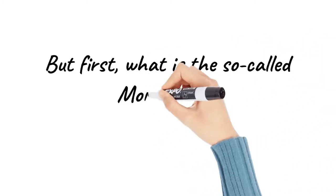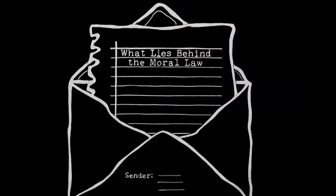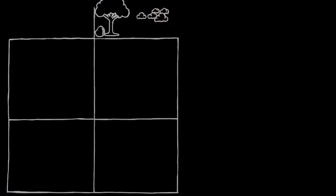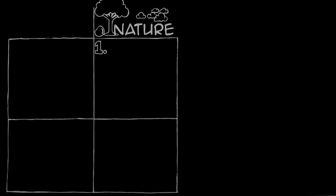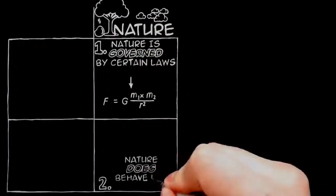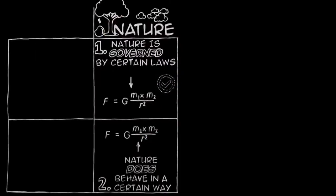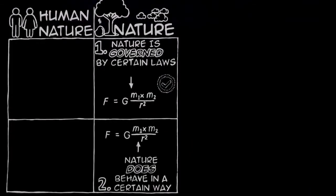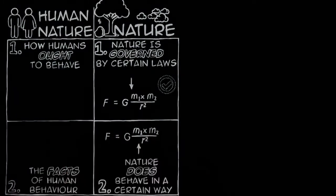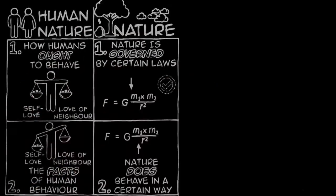Before we proceed, let's first understand what is the moral law. What lies behind the moral law? Let us sum up what we have reached so far. In the case of stones and trees and things of that sort, what we call the laws of nature may not be anything except a way of speaking. When you say that nature is governed by certain laws, this may only mean that nature does, in fact, behave in a certain way. The so-called laws may not be anything real, anything above and beyond the actual facts which we observe. But in the case of man, we saw that this will not do. The law of human nature, or of right and wrong, must be something above and beyond the actual facts of human behaviour. In this case, besides the actual facts, you have something else, a real law which we did not invent and which we know we ought to obey.